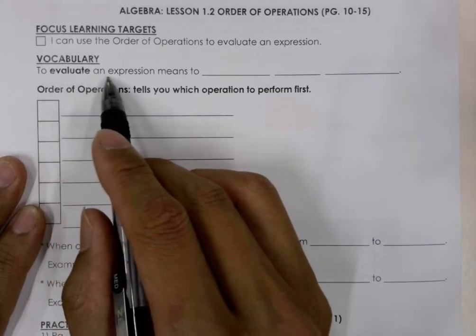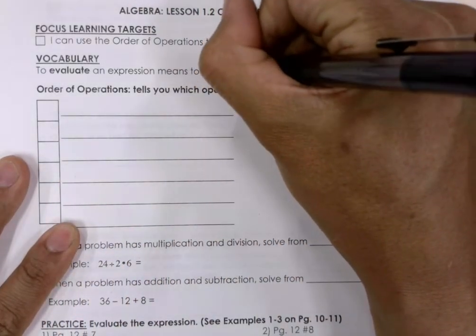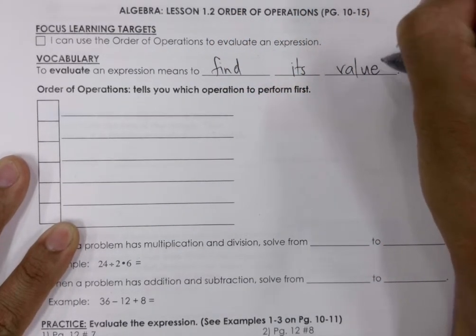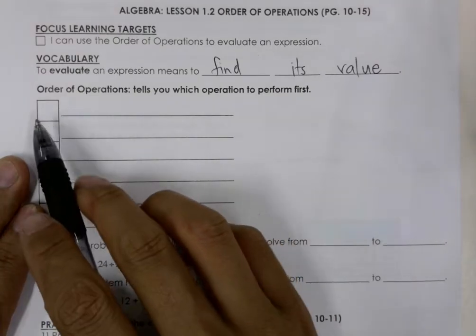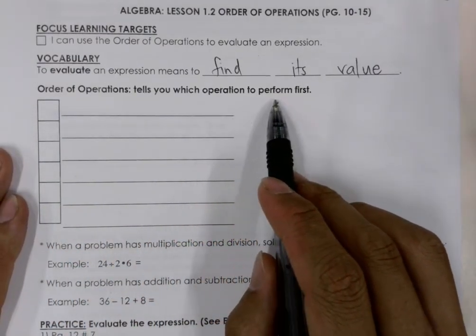To evaluate an expression means to find its value. And the order of operations tells you which operation to perform first.